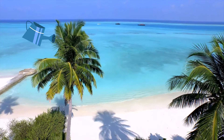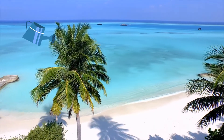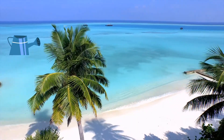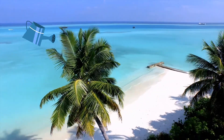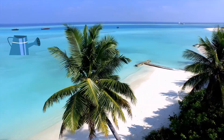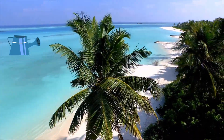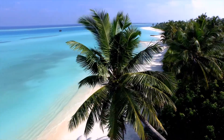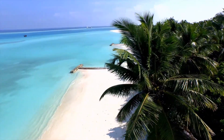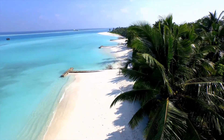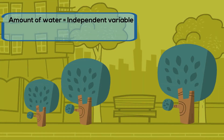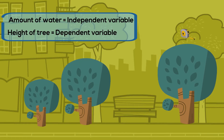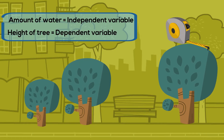Let's look at a couple more examples. The height of a tree depends on the amount of water it receives. The amount of water the tree receives is the independent variable — the amount of water will change. The height of the tree is the dependent variable because you are measuring the height of each tree.